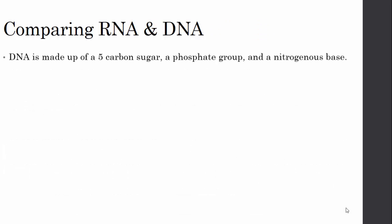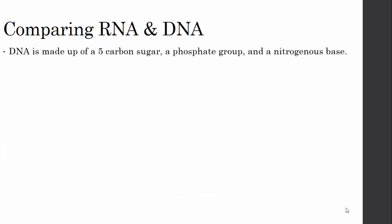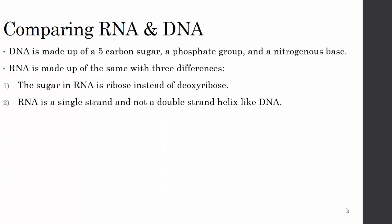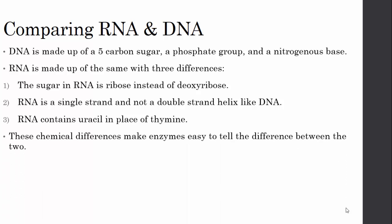Comparing RNA and DNA: DNA is made up of a 5-carbon sugar, a phosphate group, and a nitrogenous base — meaning the base is made of nitrogen. RNA is made up of the same components, but there are three differences. First, the sugar in RNA is ribose instead of deoxyribose. Second, RNA is a single strand and not a double-strand helix like DNA. Third, RNA contains uracil in place of thymine. These chemical differences make it easy for enzymes to tell the two apart.